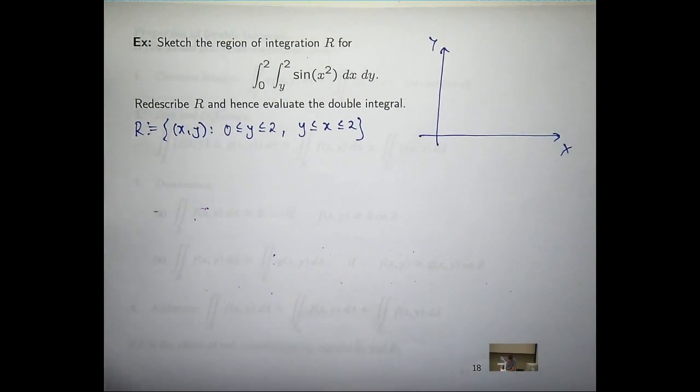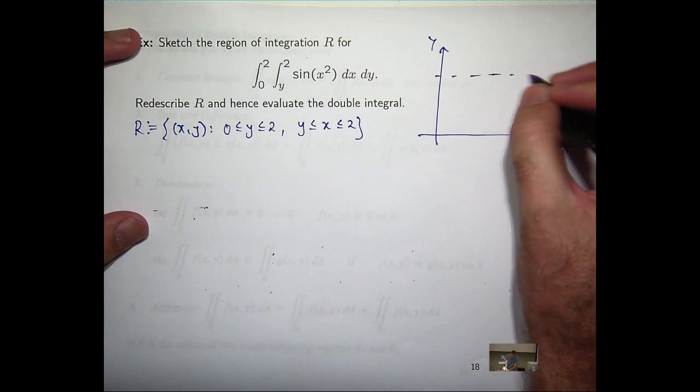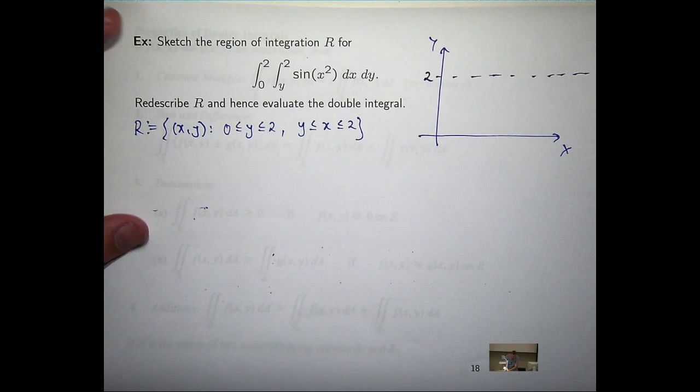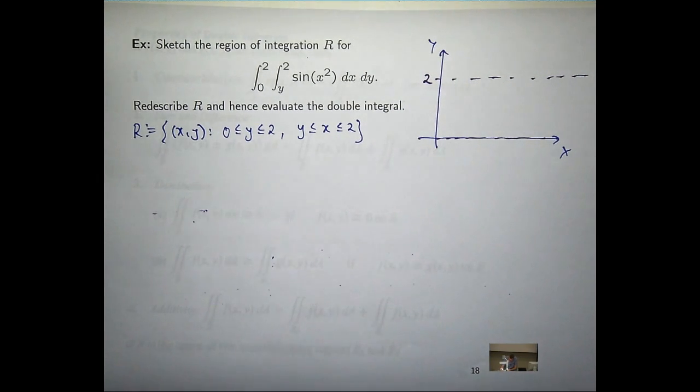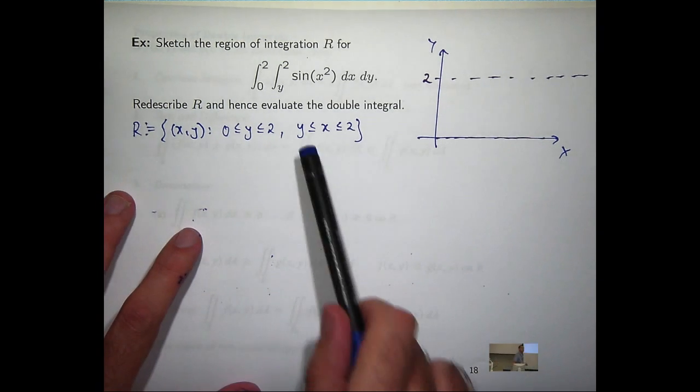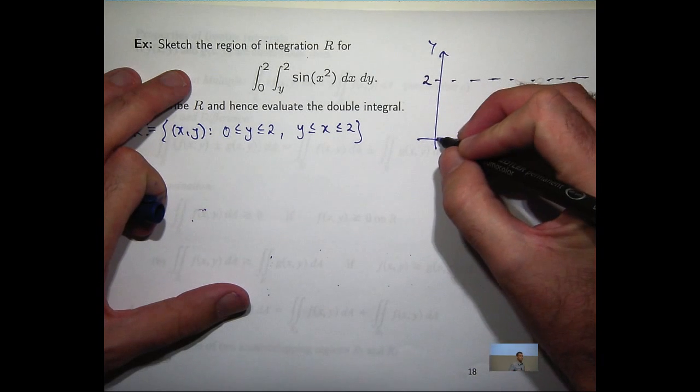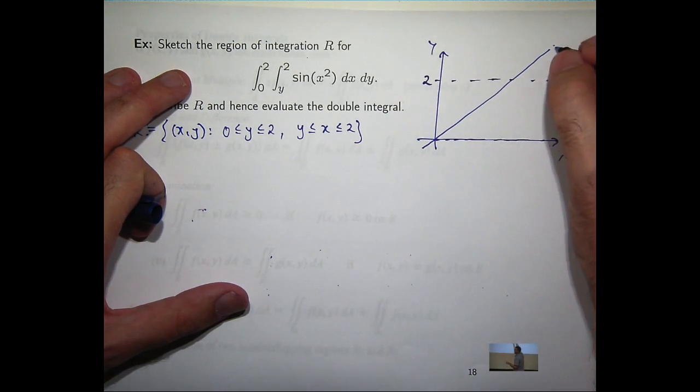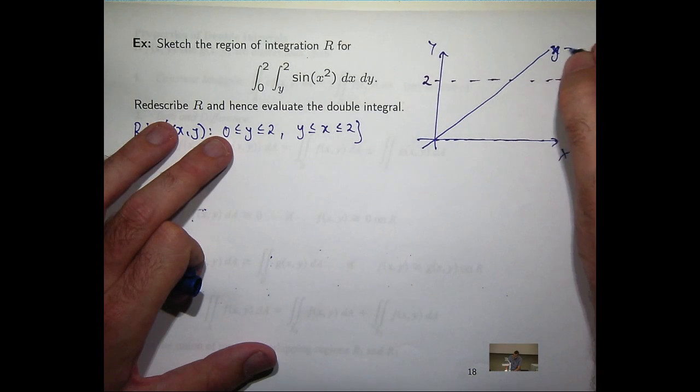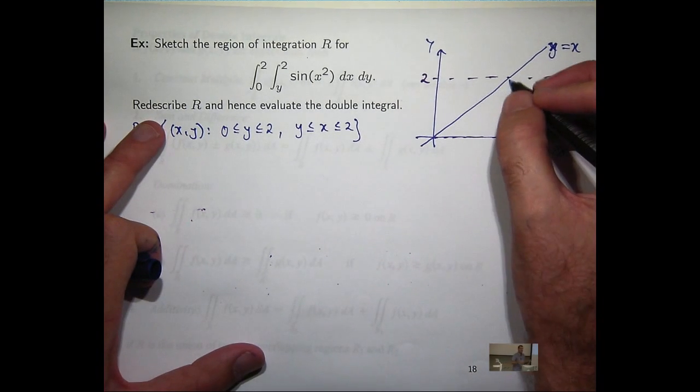We want y between 0 and 2, so we're going to have two constant and parallel lines. One's the axis, the x-axis. We've got the line y equals x in there. That will form some sort of boundary. And then they're going to connect over here.